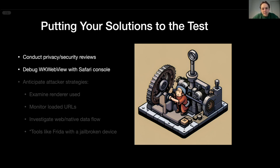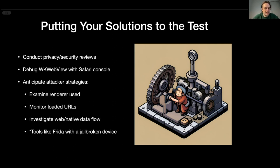Use Safari tools to debug your WKWebView. Inspect what is actually stored in the cookie store, which requests and which parameters are visible. Try to debug everything. Also try to anticipate attacker strategies — what can some attacker do trying to break your app? Probably first they will try to examine which particular renderer you are using, because if it's WKWebView it's one set of strategies; if it's Safari View Controller it might be a bit different; if it's UIWebView, then there are a lot of opportunities for the attacker.